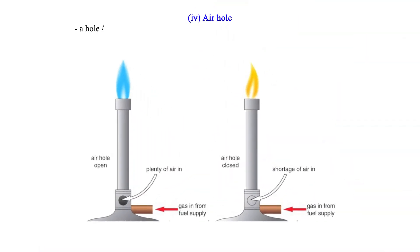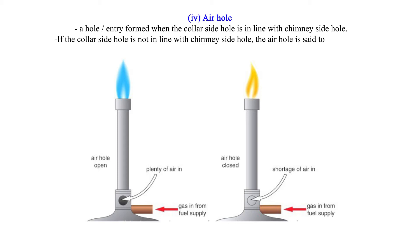4. Air hole: A hole or entry formed when the collar side hole is in line with the chimney side hole. If the collar side hole is not in line with the chimney side hole, the air hole is said to be closed. If the collar side hole is in line with the chimney side hole, the air hole is said to be open.